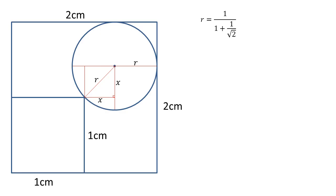This isn't in a great form, so let's simplify. If we multiply top and bottom by √2, we'll get rid of the fraction in the denominator.